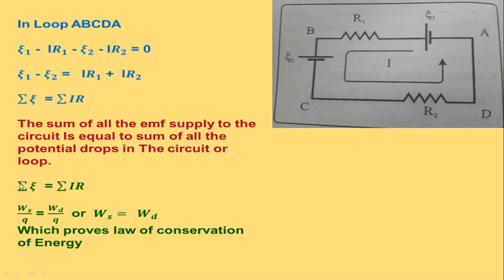Mathematically, we can write this as the definition of Kirchhoff's Voltage Law. Kirchhoff's Voltage Law is associated with the law of conservation of energy: EMF is work done per unit charge, and IR potential is also work done per unit charge. So work done per unit charge supplied equals work done per unit charge dropped. By cancelling Q on both sides, energy supplied equals energy dropped, which proves the law of conservation of energy.